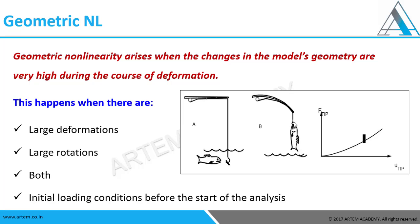The second type is geometric non-linearity. Geometric non-linearity arises when the changes in the model's geometry are very high during the course of deformation, as shown in the picture. Once a fish is caught on the fishing rod, the rod bends — but that does not mean it is a permanent bending. If we use a linear analysis, we cannot capture this bending. So even for this simple problem we have to go non-linear to capture the geometry as per the functionality of the model. Non-linear geometry conditions include large deformations, large rotations, or both, as well as initial loading conditions before starting the analysis.